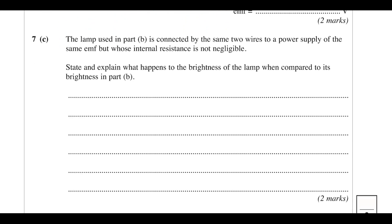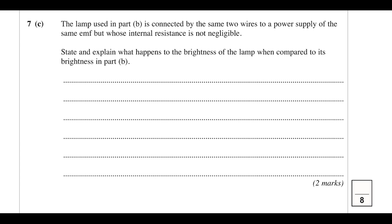For the final part: the same lamp is connected by the same two wires but the internal resistance is no longer negligible. State and explain what happens to the brightness. Its brightness decreases. The EMF supplied is constant but the total resistance is now bigger because we have to factor in the internal resistance, so the current is smaller.